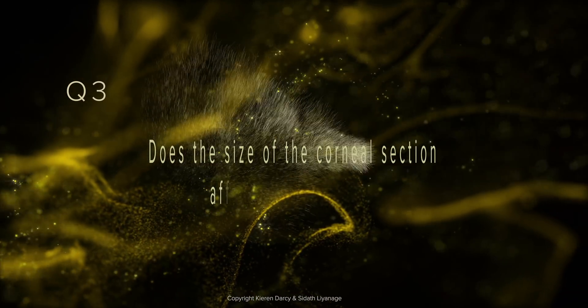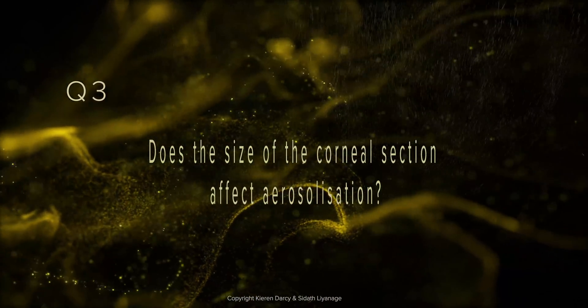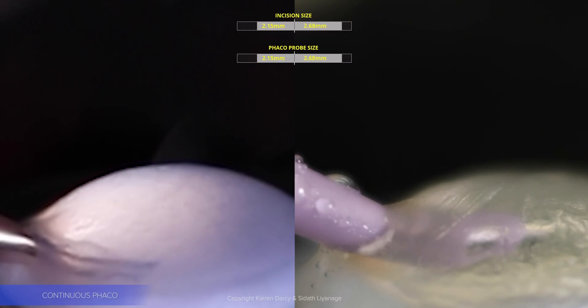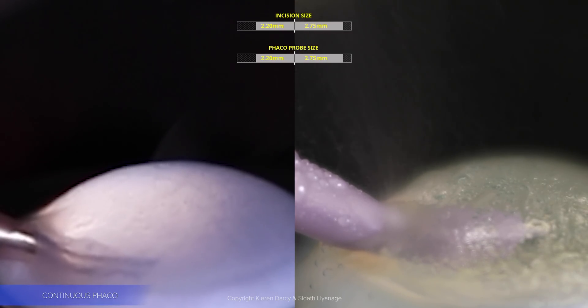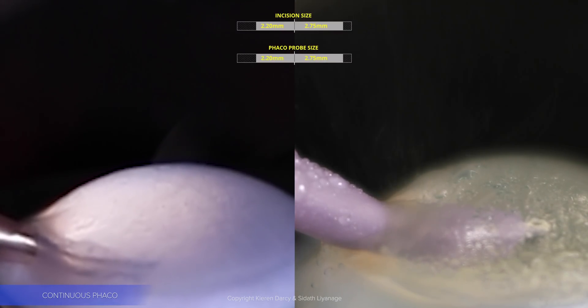Question 3: Does the size of the corneal section affect aerosolisation? The left, a 2.2mm incision. The right, 2.75mm. Both with corresponding phacoprobe sizes. With repeated testing, no aerosol is visible with a 2.2mm setup.